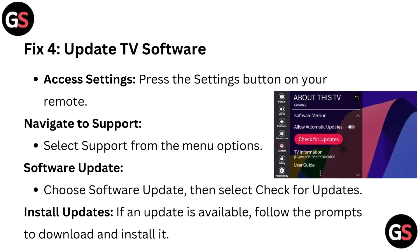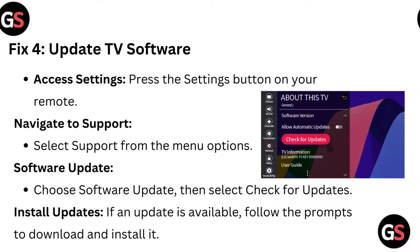Fix 4: Update TV software. Press the settings button on your remote and select Support from the menu options. Choose Software Update, then select Check for Updates. If an update is available, follow the prompts to download and install it.